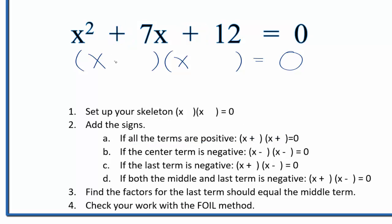Once we've got those signs, now we can find the factors for the last term. That's 12 that add up to the middle term, that's the 7. So we'd have 1 times 12, 2 times 6, and then 3 times 4. Those are the factors of 12.